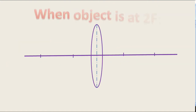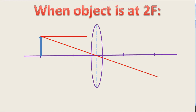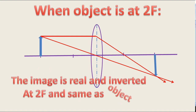When the object is at 2F, the rays of light coming from the object pass through the lens and intersect at 2F. The nature of the image is real and inverted. The image is formed at 2F and is the same size as the object.